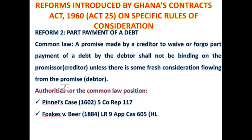At common law, a promise made by a creditor to waive or to forgo the part payment of the debt shall not be binding against the promisor unless there is some form of consideration flowing from the promisee. If you are saying that I have waived three thousand dollars, show me what you have done for me as consideration to merit me waiving that three thousand dollars. If you haven't done anything, under the common law that promise to waive or to forgo the part payment of the debt shall not be binding on the promisor.